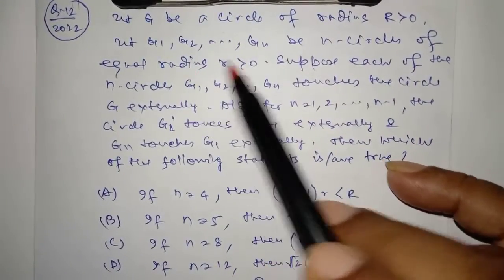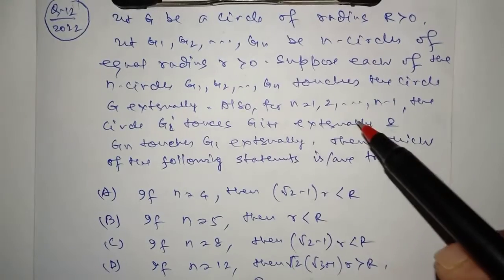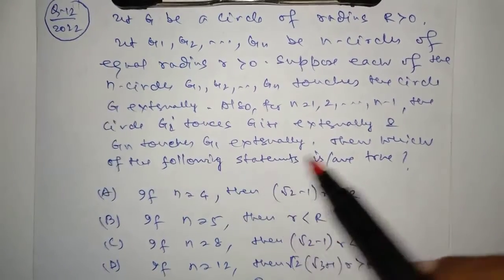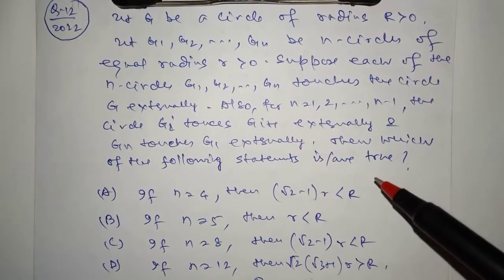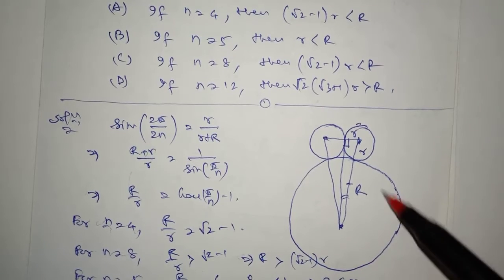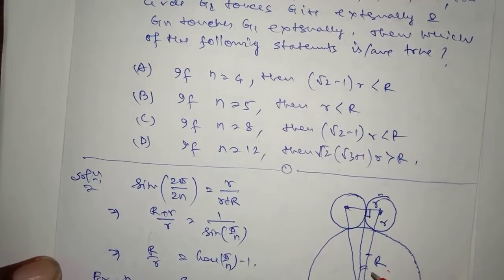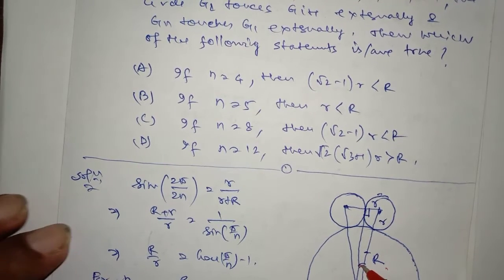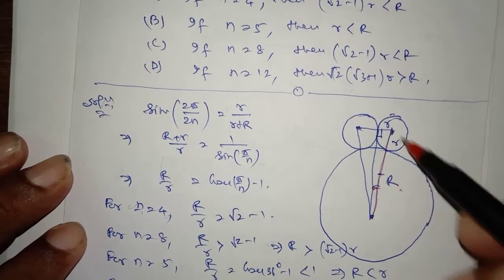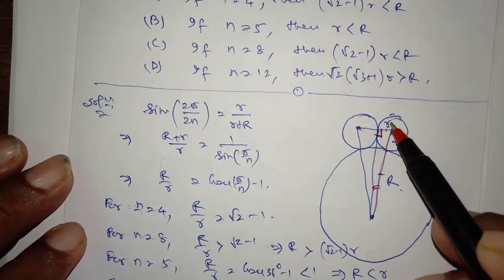Question 10: Let G be a circle of radius R, and G₁, G₂, ..., Gₙ be n circles of equal radius r. Each Gᵢ touches circle G externally. Also each Gᵢ touches G(i+1) externally, and Gₙ touches G₁. The angle at center between adjacent small circles is 2π/(2n) = π/n. The length from center to small circle center is R+r, and sin(π/n) = r/(R+r), giving the key relation R/r = (1/sin(π/n)) − 1.